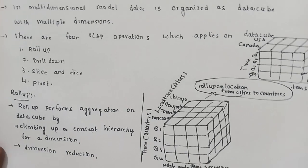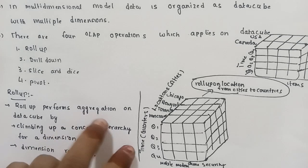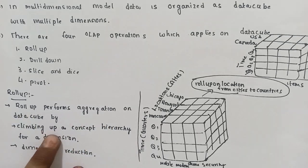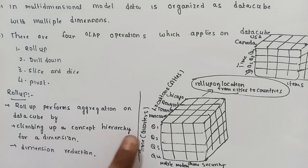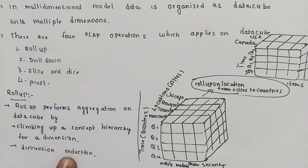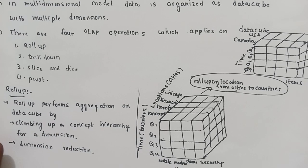First, Roll Up. Roll up performs aggregation on a data cube by climbing up a concept hierarchy for a dimension, or by dimension reduction.